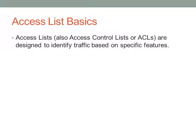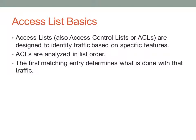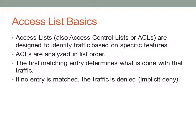Access lists, by themselves, do not do anything other than identify traffic. Until they're applied, they are completely meaningless. Access lists are analyzed in list order — the first entry to match is the first entry that applies. And if traffic goes through the access list and no entry is matched, then traffic is denied implicitly. This is a feature we refer to as implicit deny.